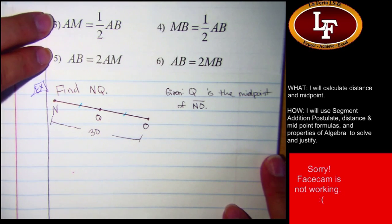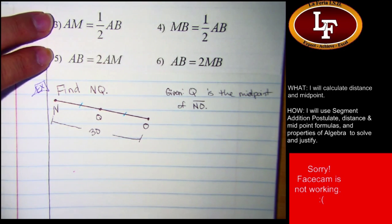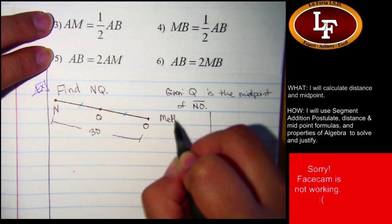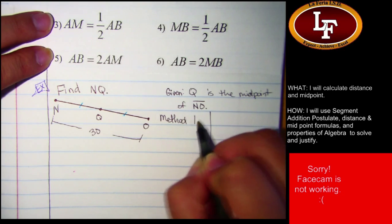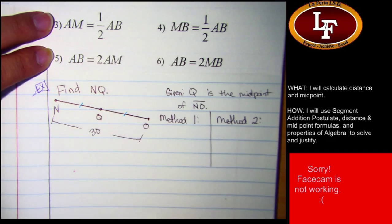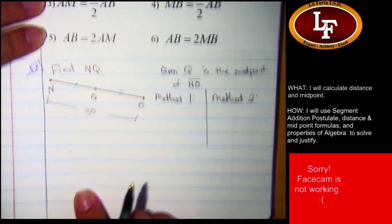How would I find the length of NQ? Well, I know that Q is the midpoint so I know these are congruent. One more time? Yeah, we're going to split it in half because each one of these is half of the whole thing. Half of 30 is 15.